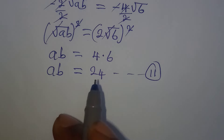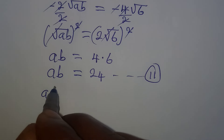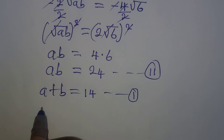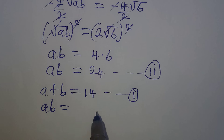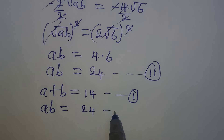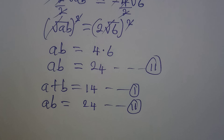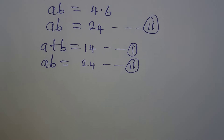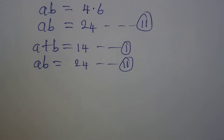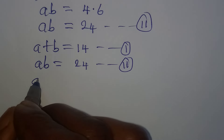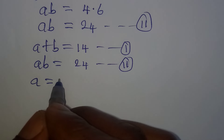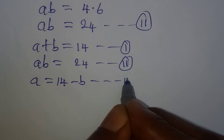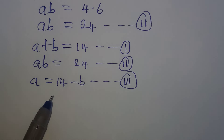Now bringing equation one and two together to form a simultaneous equation: equation one is a plus b equals 14, and equation two is ab equals 24. From here we can make a the subject from equation one, so a equals 14 minus b, and we shall call this equation three because we are going to need it.